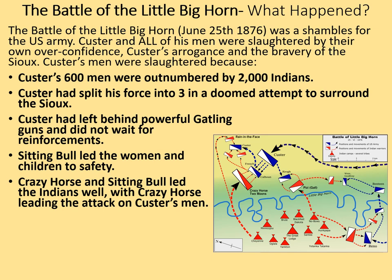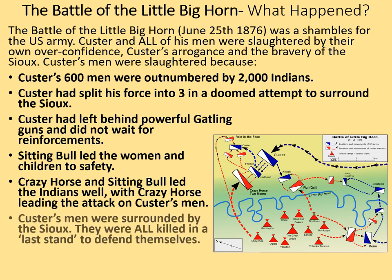Sitting Bull was not in a position to take part in the fighting directly. He had taken part in a Sundance sometime before, and the pain and injuries this inflicted on him — while a useful boost to Indian morale — meant he was unable to fight; that's why he led the women and children away. Custer's men were surrounded by the Sioux and all killed in a last stand to defend themselves.